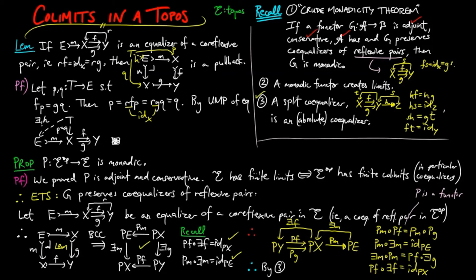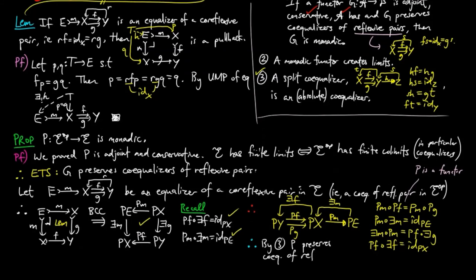Therefore, by three above, P preserves co-equalizers of reflexive pairs, and therefore P is monadic, completing the proof.